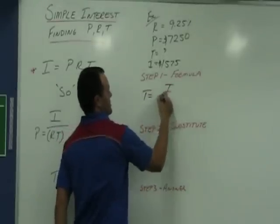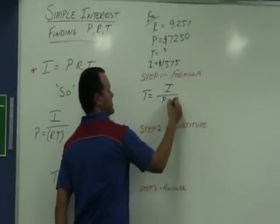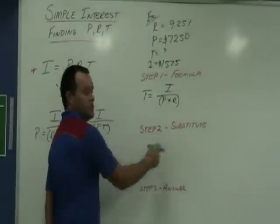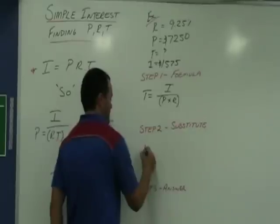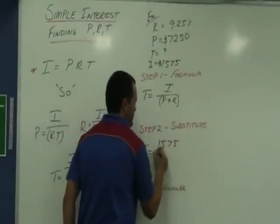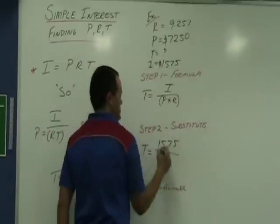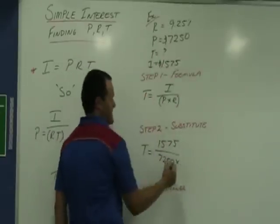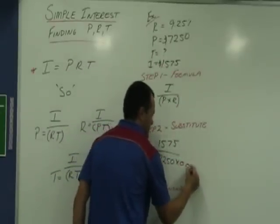Time is equal to interest divided by principal times the rate with the brackets. Step two, let's substitute in. Time, the interest is $1,575. The principal is $7,250. The rate is as a decimal fraction, 0.0925.